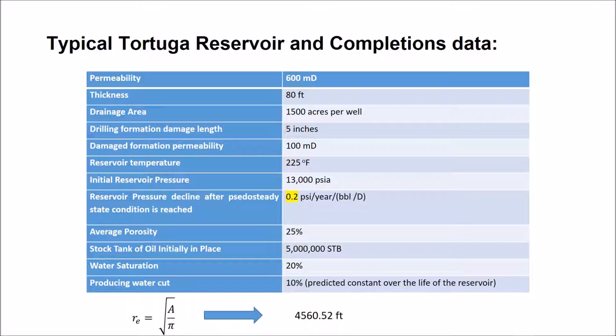The following are typical Tortuga reservoir and completions data. This data will be used for calculating flow rates, pressure changes, and completions data. We were also able to solve for R sub E with a simple calculation available at the bottom of the screen.